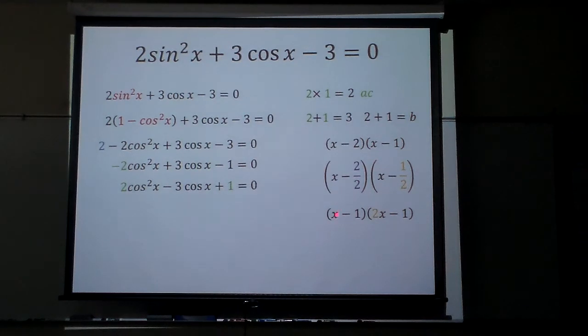And notice the x is the same thing as the what? Cosine. If I foiled this, I would get 2x squared minus 3x plus 1. That's exactly what that means right there. So I'm just going to replace those like that.